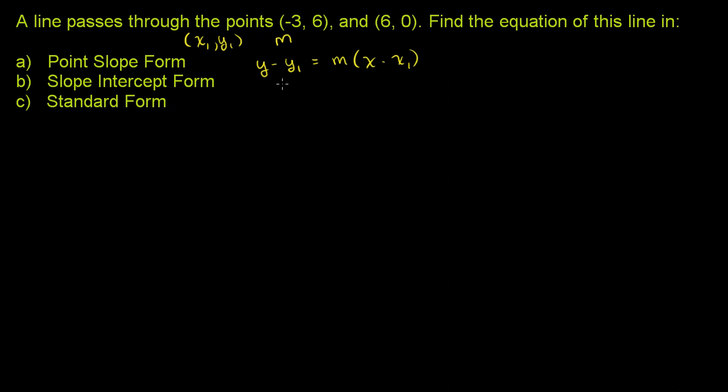Slope-intercept form is y = mx + b, where m is the slope and b is the y-intercept. Where does the line intersect the y-axis? What value does y take on when x is 0?